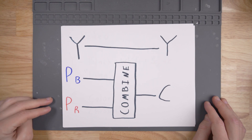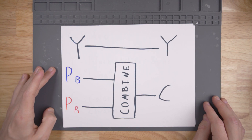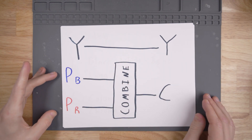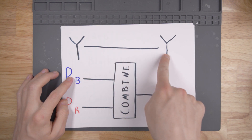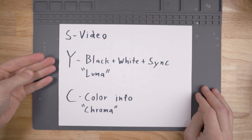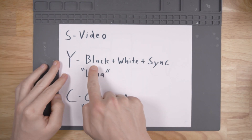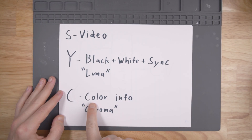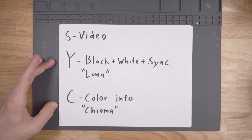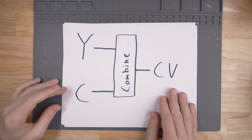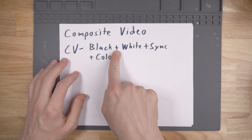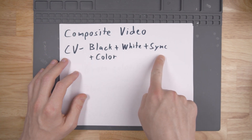If we take the YPBPR signals and combine the PB and PR signals together, we can create something called C. This is just a function that combines PB and PR together, and the Y carries over without any combination. This Y and C signal forms what we call S-Video, where Y is still the black and white picture information along with sync, but the C signal is now all the color information, otherwise known as chroma. We can take this another step by combining the Luma and Chroma signals together, and we can create what's known as composite video — really everything together: the black and white picture information, sync, along with the color information.